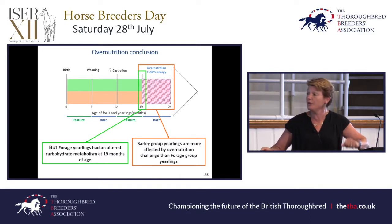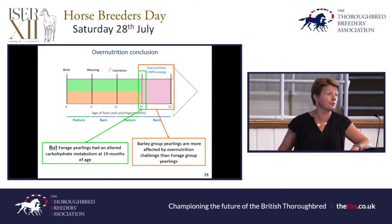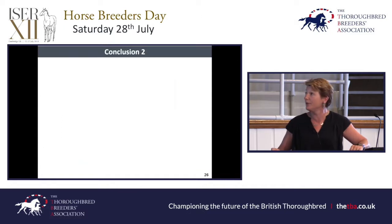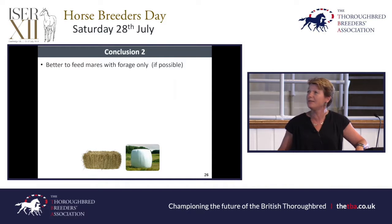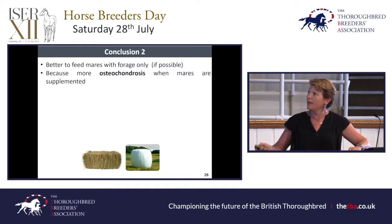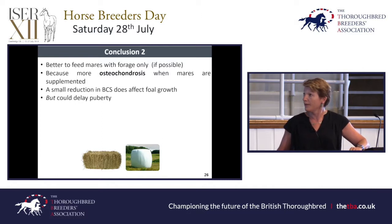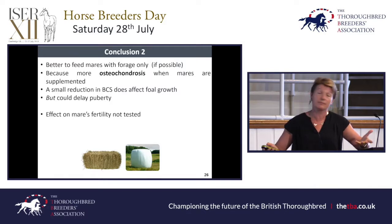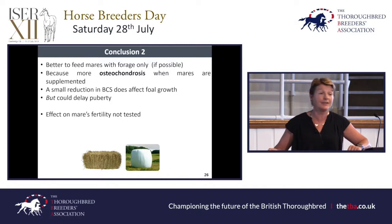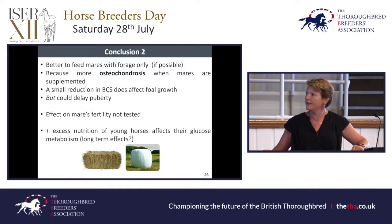However, the forage yearlings already had an altered carbohydrate metabolism at 19 months of age, and maybe that's why they were not as much affected by overnutrition. I won't have clear answers to those questions, but they need to be considered. From what we saw, we still thought it was better to feed mares with forage only if possible, because carbohydrates really change insulin metabolism, and there's more osteochondrosis when mares are supplemented. The small reduction in body condition score did not affect foal growth. It could delay puberty, but looking at Sue McDonnell's work, I don't think it has much of an effect.